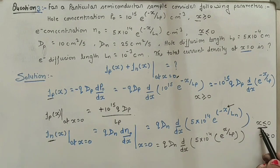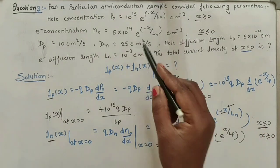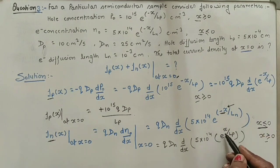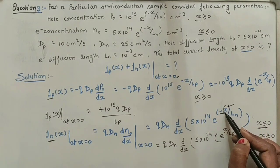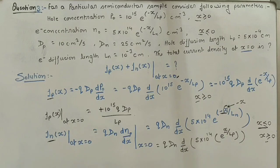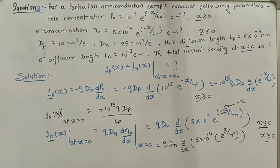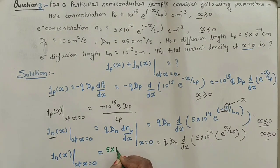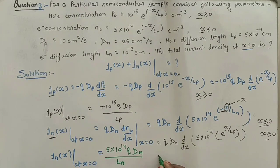Since the question gives the electron concentration for x ≤ 0, and we need to evaluate both currents in the same direction (x ≥ 0), we replace x by minus x in the electron expression. This turns minus x back to plus x after differentiation (minus × minus = plus). Therefore JN(x=0) = 5 × 10¹⁴ · q · DN / LN, valid when x ≥ 0.